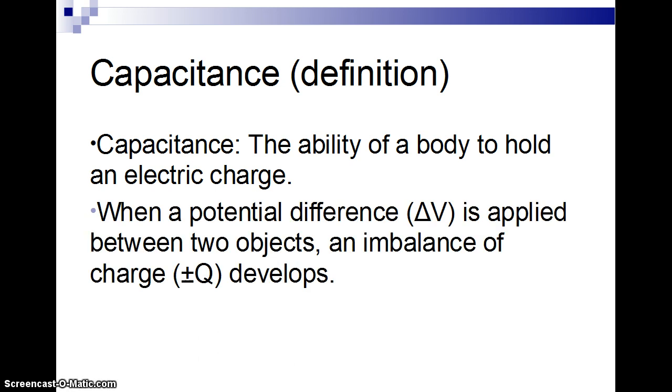And basically, if you have a potential difference delta V, a voltage between two objects or two sides of an object, you get a charge buildup between the two objects, positive on one side and negative on the other.